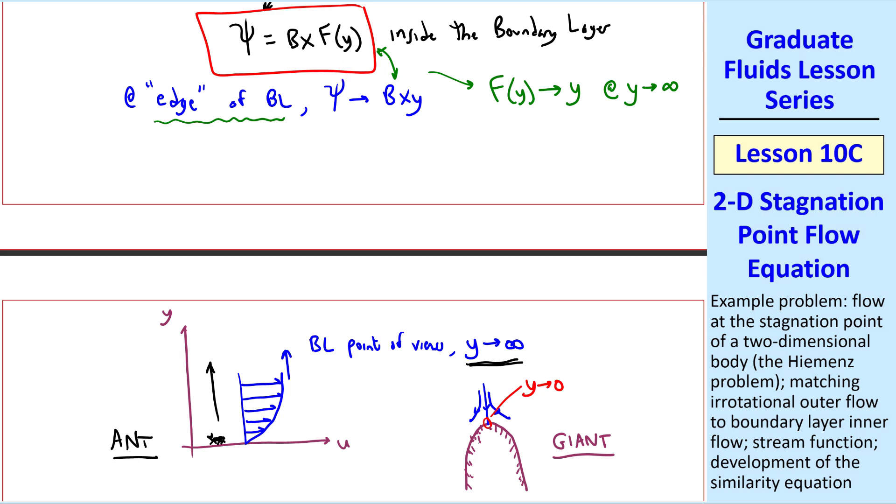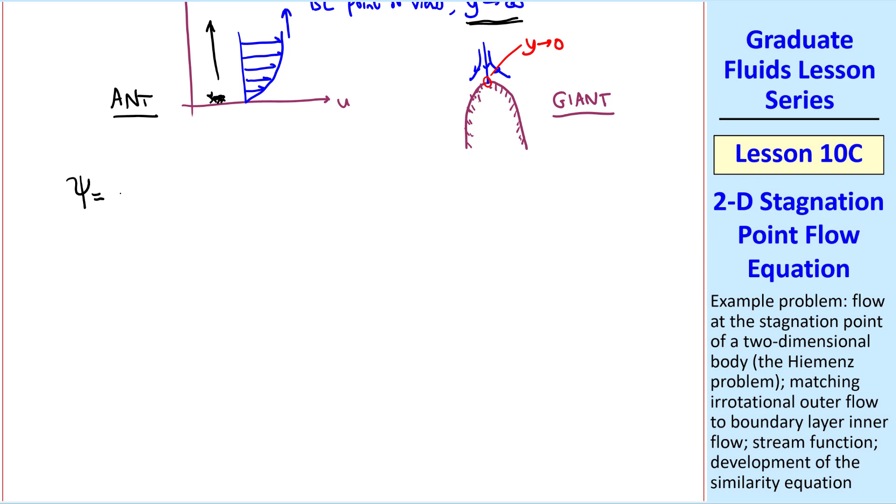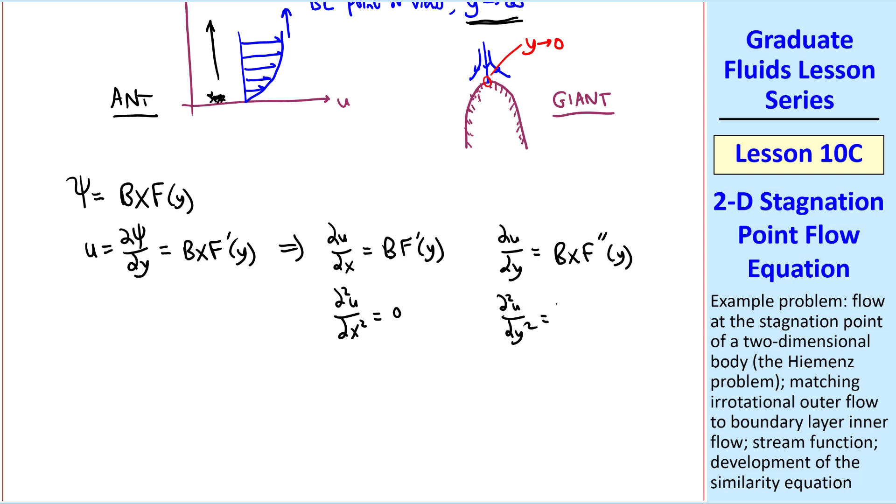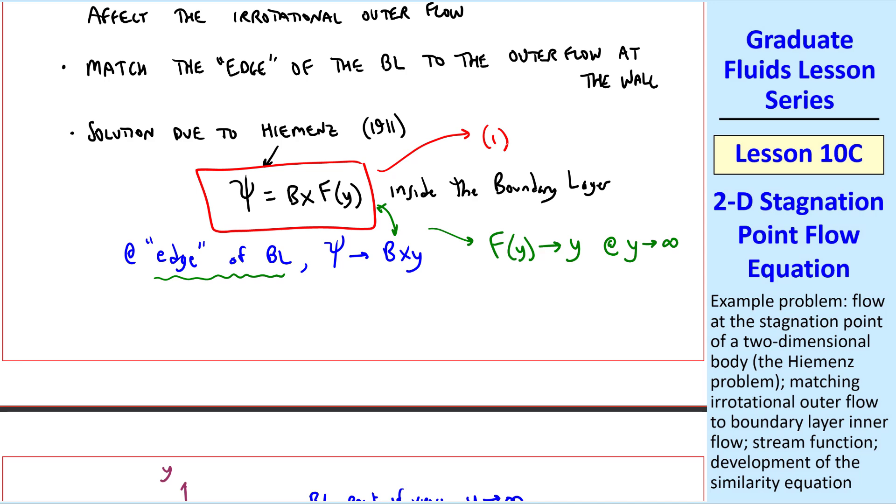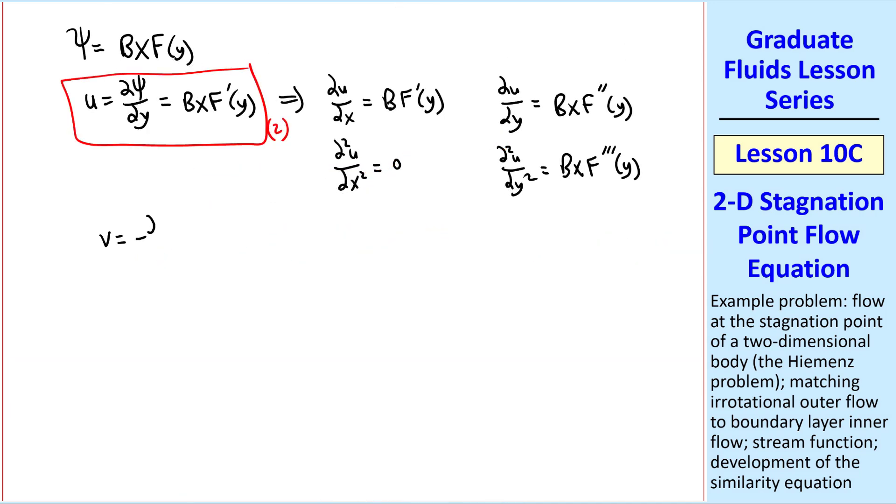Mathematically, let's plug this ψ into our Navier-Stokes equations and see what happens. We'll do a little math with some derivatives. Since u = ∂ψ/∂y, we get bx·f'(y), from which ∂u/∂x = b·f'(y), and ∂u/∂y = bx·f''(y). We can continue with other higher order derivatives. ∂²u/∂x² = 0, and ∂²u/∂y² = bx·f'''(y). Let's call this equation two, where this equation is equation one. Similarly, v = -∂ψ/∂x, which becomes -b·f(y). I'll call that equation three. And we can also write the derivatives: ∂v/∂x, ∂²v/∂x², ∂v/∂y, and ∂²v/∂y².